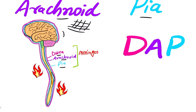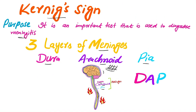You can easily remember the three layers of the meninges by this mnemonic: D for dura mater, A for arachnoid mater, and P for pia mater. Dura is the outermost layer. Between dura and arachnoid mater is the subdural space, and between arachnoid mater and pia mater is the subarachnoid space.